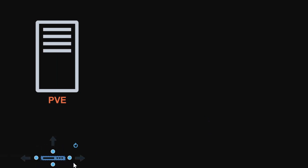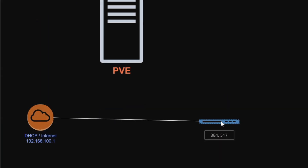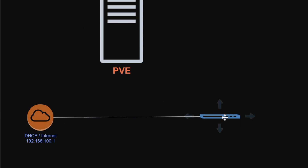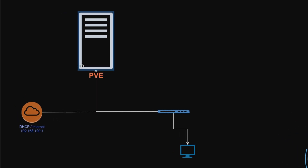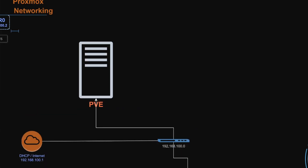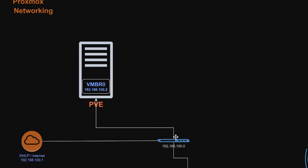Suppose this is your first Proxmox server. There is a physical switch connected with the gateway, which is also responsible for providing IP addresses to computers on the network. I might have multiple computers on my network getting IP addresses in the same range of 192.168.100.x. I have established a connection from here to this Proxmox virtual environment. The IP address provided to PVE — the first node of Proxmox — uses virtual bridge vmbr0, which is connected to the physical port. That physical port is connected to this network, so from the DHCP server through the switch, it gets the IP address 192.168.100.2.